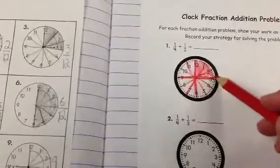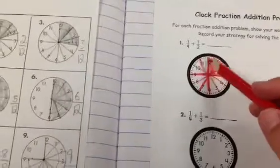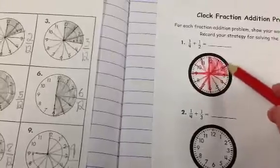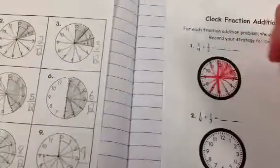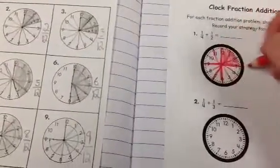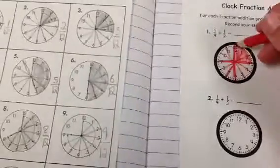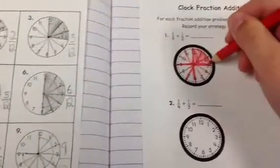First, I broke up the clock into four sections. At first, I thought I needed to break it up into 12, but then I realized I needed to break it up into four. And then I colored in one-fourth so far.